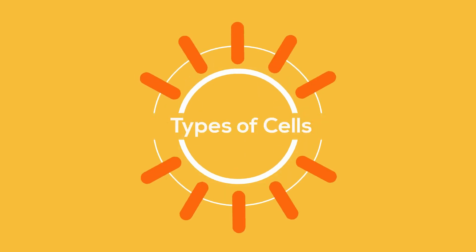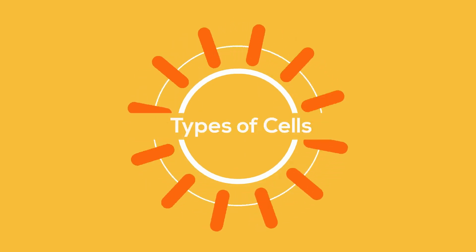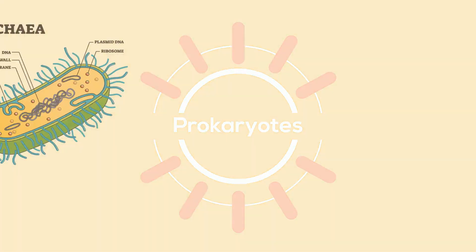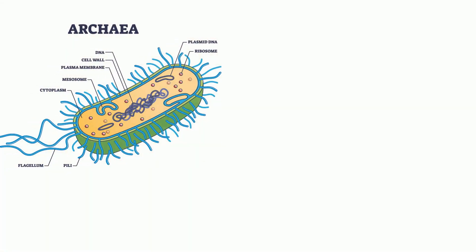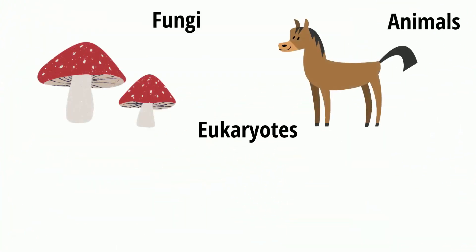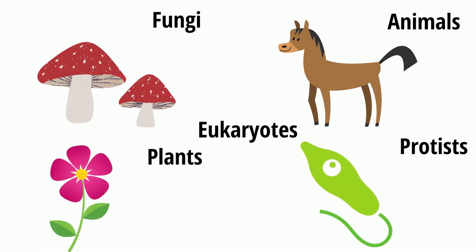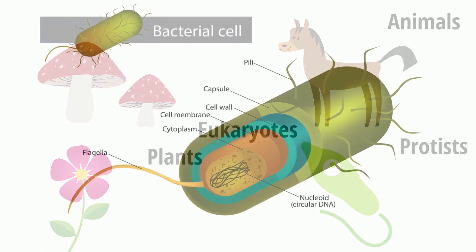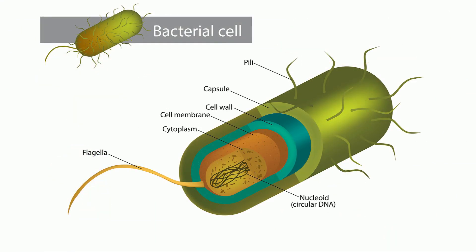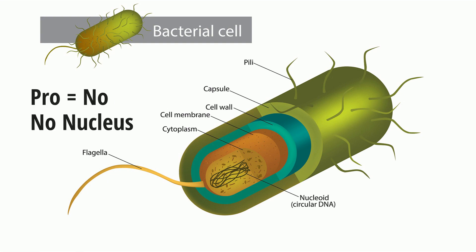To begin with, there are two major types of cells. Prokaryotes, which are found in the kingdom Archaea and Bacteria, and eukaryotes, which are found in fungi, animals, produce, and plants. Prokaryotes have no nucleus or membrane-bound organelles. I remember this by saying pro rhymes with no, for no nucleus.